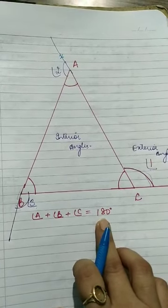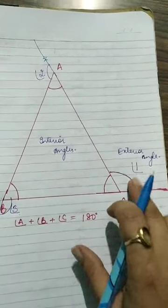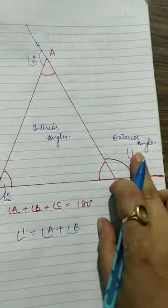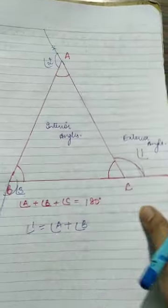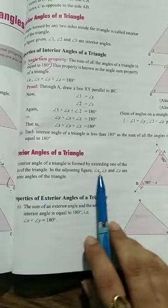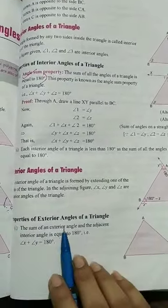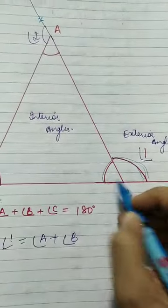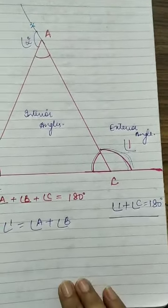For interior angles: angle A plus angle B plus angle C equals 180 degrees. There is also a property for exterior angles: angle 1 equals angle A plus angle B. The exterior angle of a triangle is equal to the sum of the two interior opposite angles.